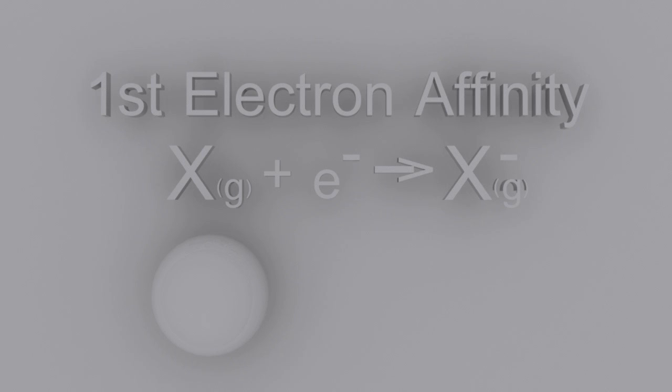The first electron affinity is the energy change when you add an electron to a gaseous atom. The atom will get bigger too, as it turns into an ion.